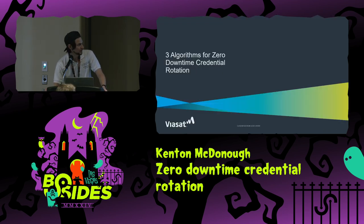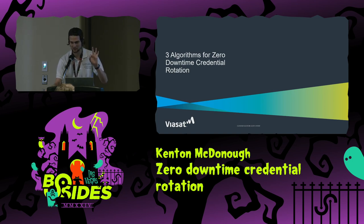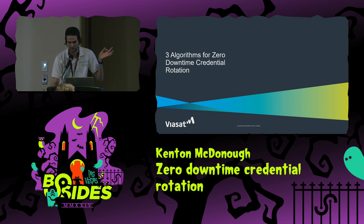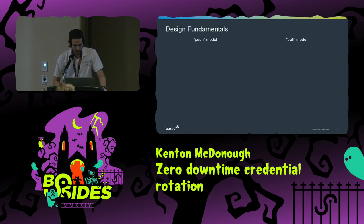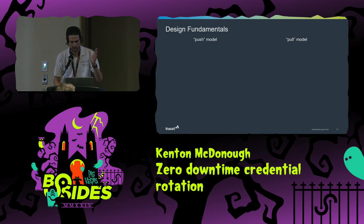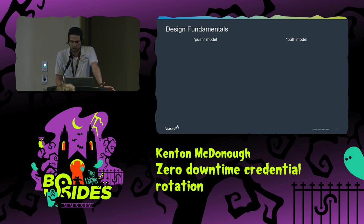Now that you have all of this, here are three algorithms for zero downtime credential rotation. If you take nothing else away, these are simple things you can put into your apps to make this work. Before talking about the algorithms, let's cover the big picture. You either have a push model or a pull model for credentials.